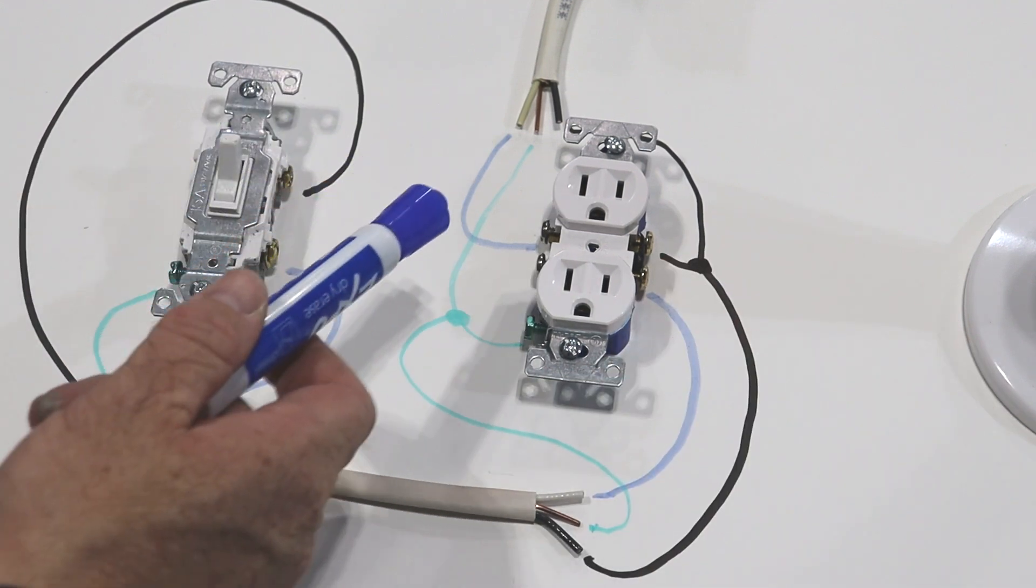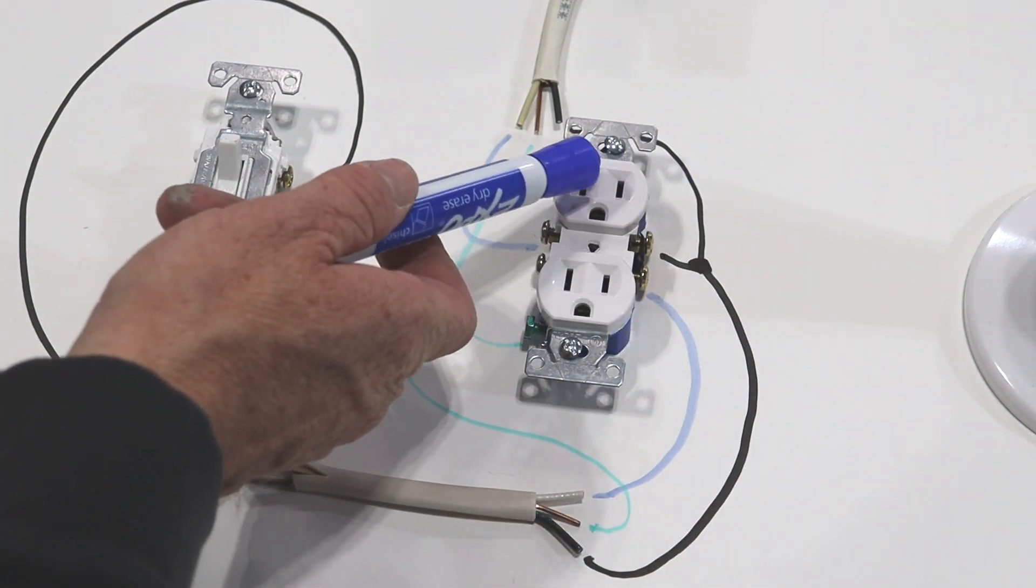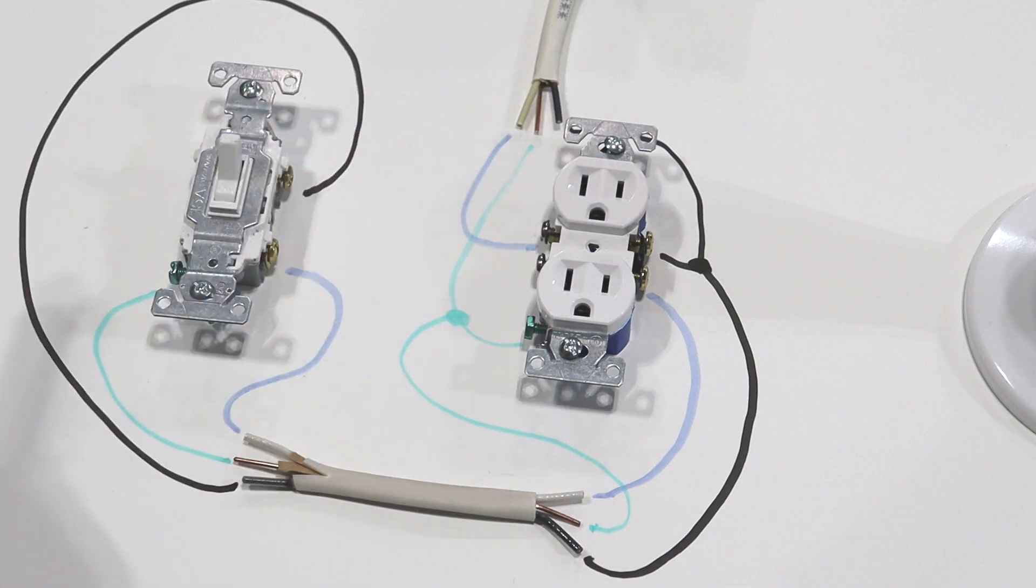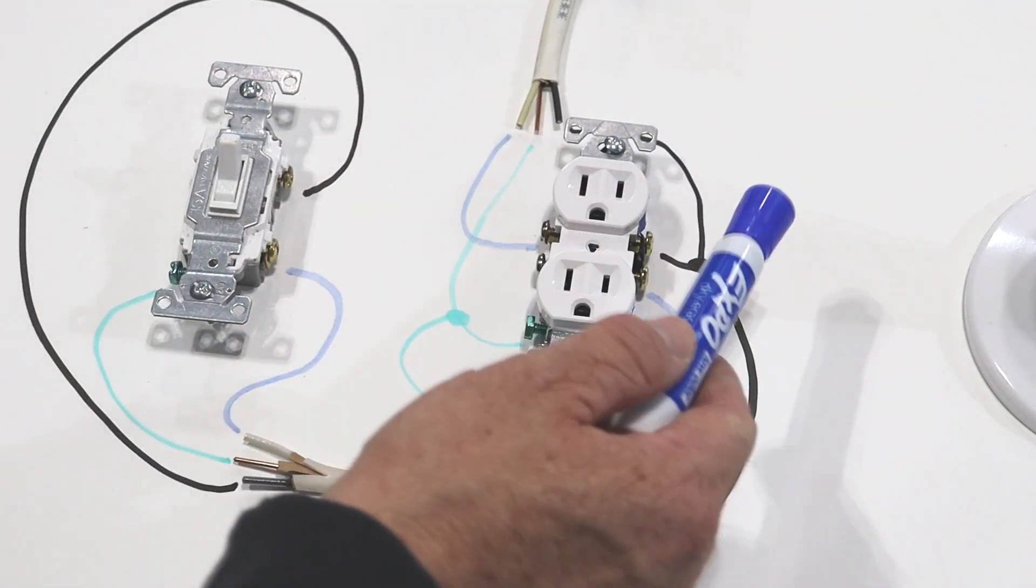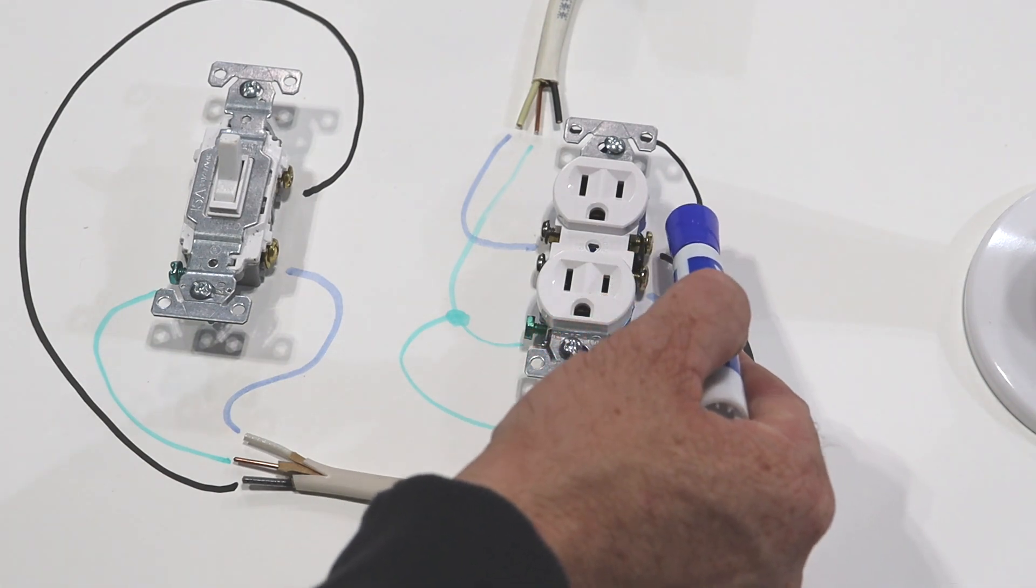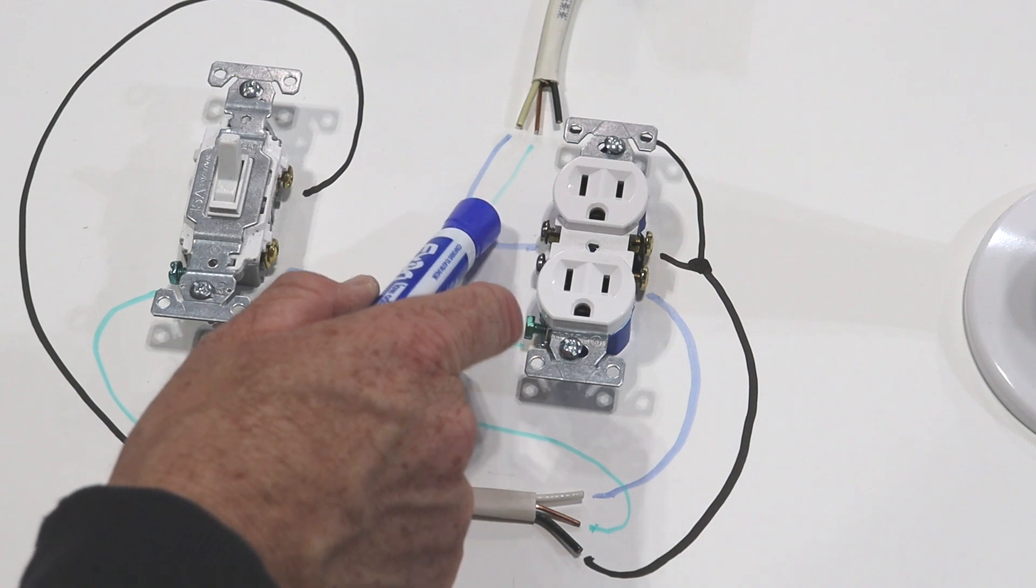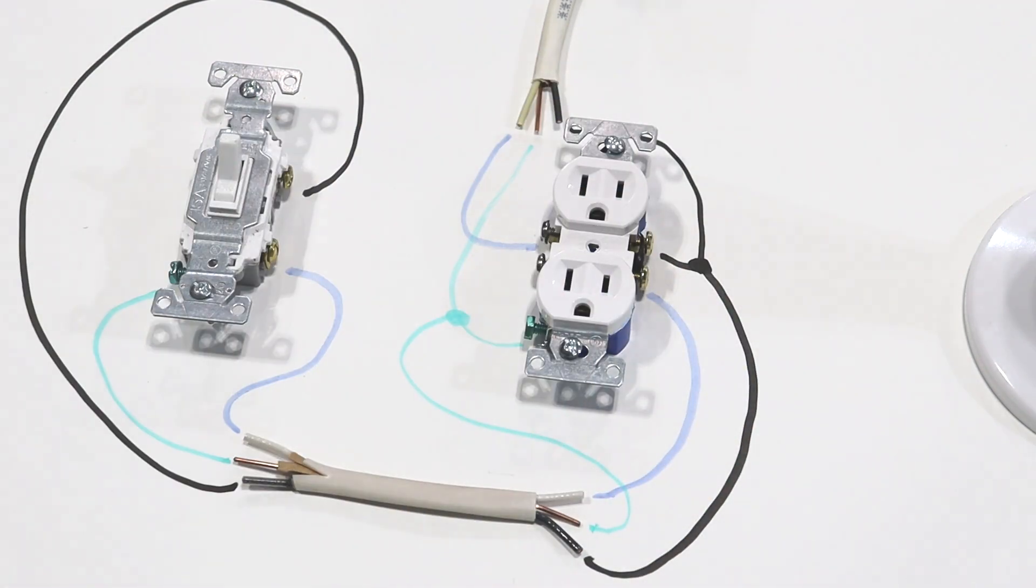So at this point, hopefully we can all agree that at least this top portion of the outlet, this top outlet of the receptacle, is hot all the time. We already know that because we have our black wire coming in that makes this screw hot, which makes this portion of the outlet hot. And then we have our neutral going back, so we already know that this is always going to work if we plug something into it.